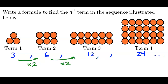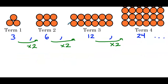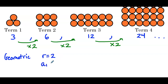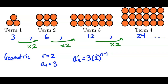That means we have a geometric sequence. The common ratio is 2, and the first term — a sub 1 — is 3. So we can write the explicit formula: a sub n equals 3 times 2 to the n minus 1. We can use this formula to find any term of the sequence.